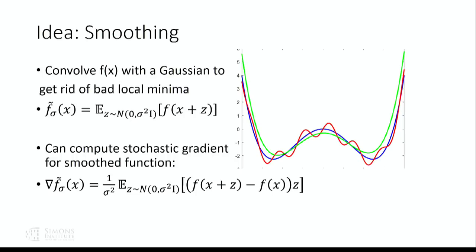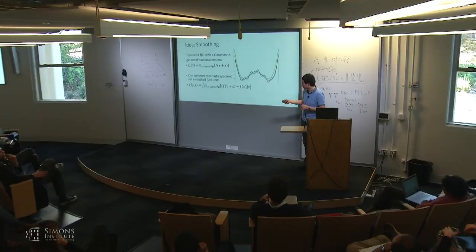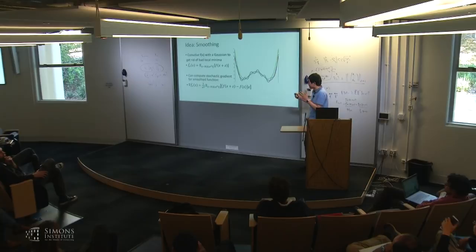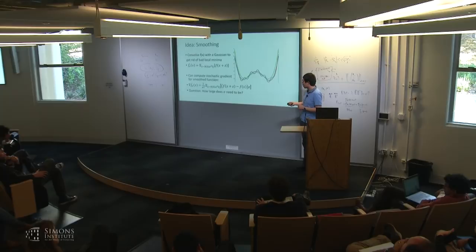This definition is nice because computing a stochastic gradient for the smooth function only requires two queries. The gradient of f^sigma is equal to (1/sigma^2) times the expectation over z of [f(x+z) - f(x)] times z. So to get a stochastic gradient estimate, I just need to query the function at two points — x+z and x — and compute this vector. [Discussion: lowercase f doesn't need to be differentiable; capital F needs to be differentiable. If small f is bounded and measurable, the expectation exists.]